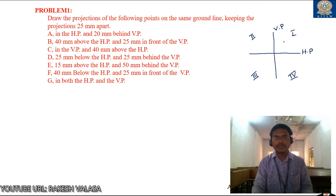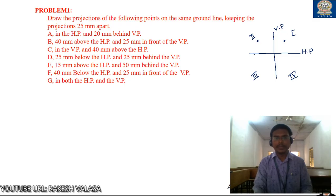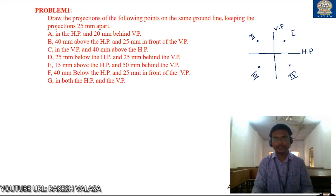For example, the point in the first quadrant means the point is above HP and in front of VP. Similarly, the point in the second quadrant means the point is above HP and behind VP. The point in the third quadrant means the point is below HP and behind VP. The point in the fourth quadrant means the point is below HP and in front of VP.